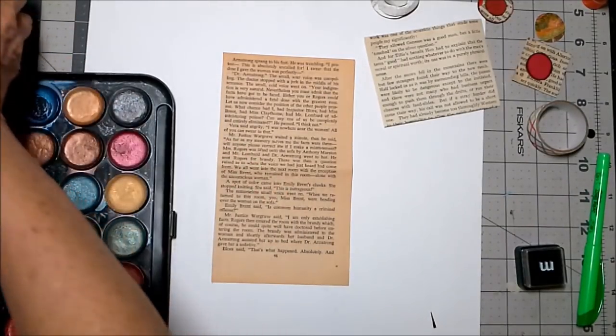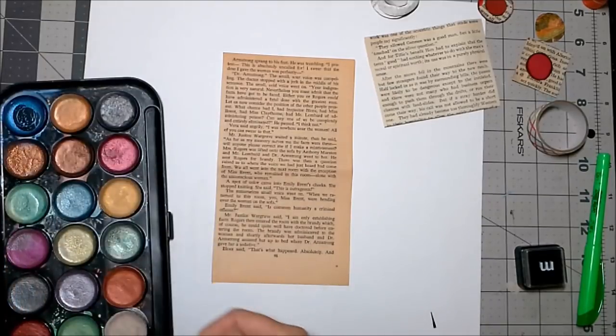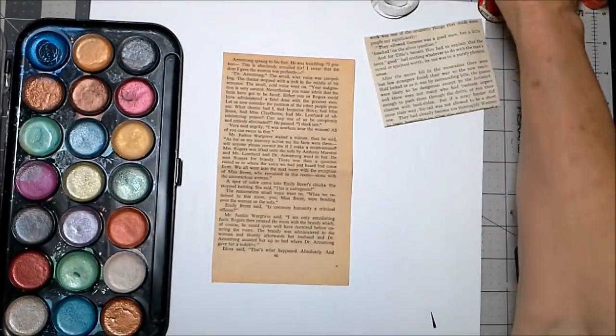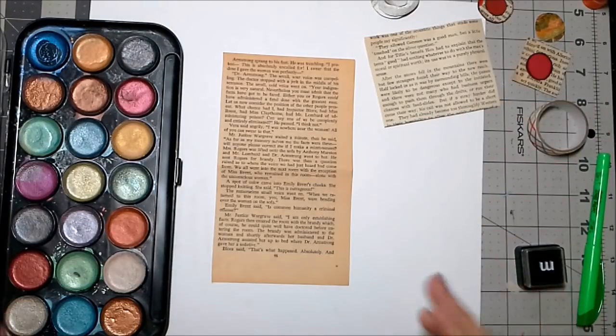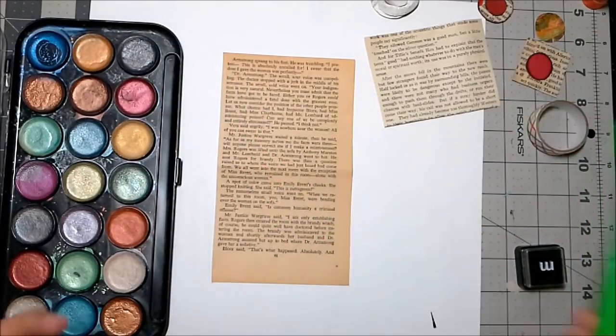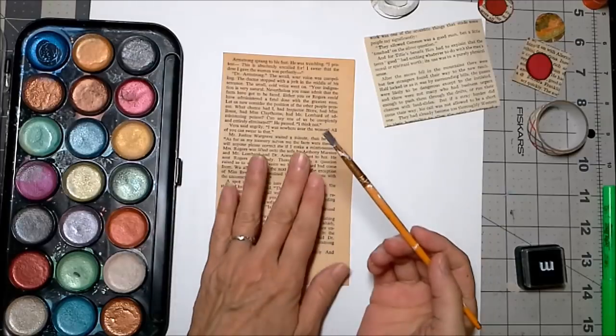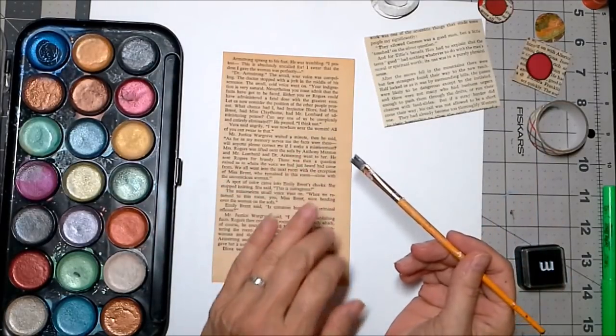You can do this if you want color on your text. You can paint it like I'm going to do or you can use a highlighter and highlight it to add just a little bit of color. After we add a little bit of color and let this dry, I'll show you something else that you can do with your text pages.